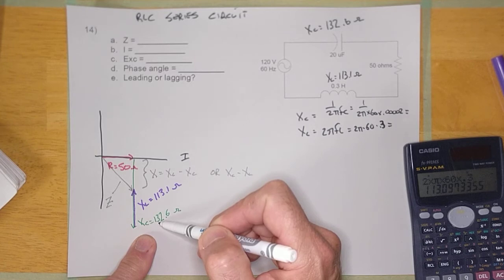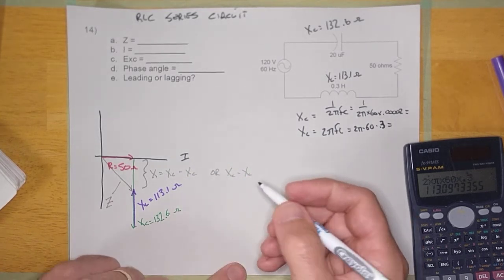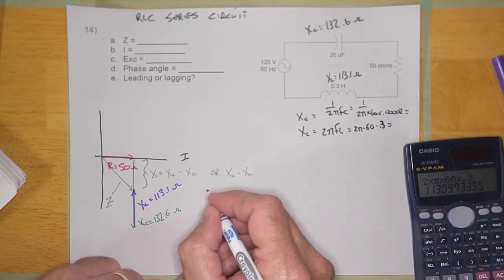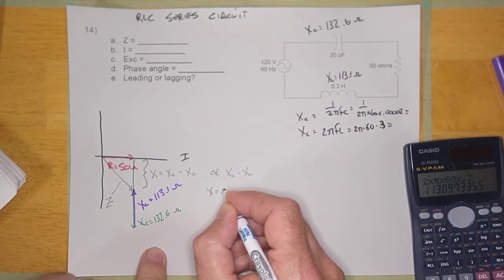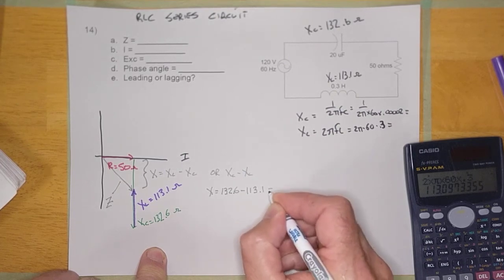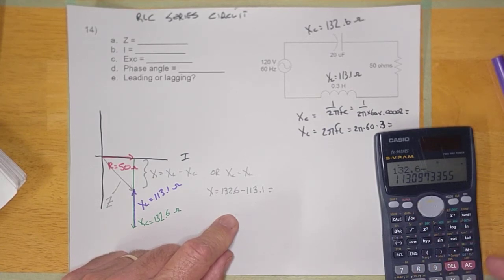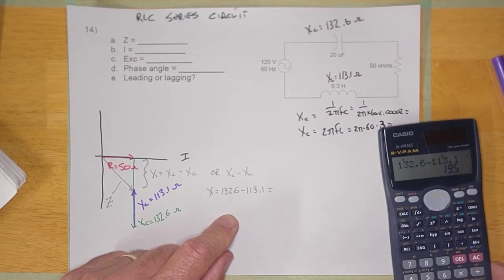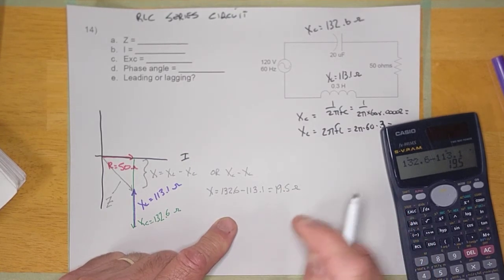X will be 132.6 minus 113.1. Just take the bigger number and subtract the smaller number. So X equals 132.6 minus 113.1, and I'm going to calculate that. 132.6 minus 113.1 equals 19.5 ohms.